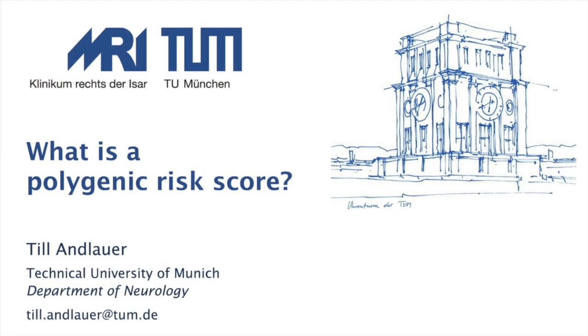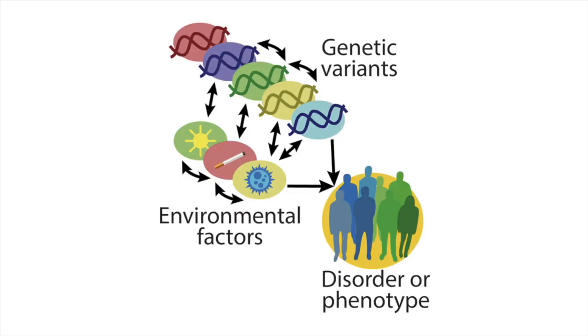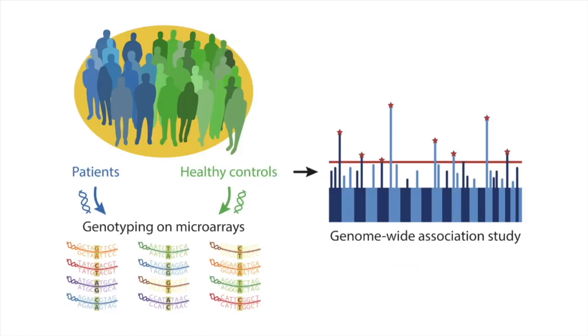In this video I'm going to introduce you to polygenic risk scores, PRS, also often now called polygenic scores, PGS, because you can also calculate them on quantitative traits like for example brain volumes. All complex common disorders are polygenic. If you want to quantify genetic risk for a complex disorder you thus have to assess the effects of many genetic variants at the same time. The basis for a PRS is a GWAS, and there's a separate video explaining what that is.